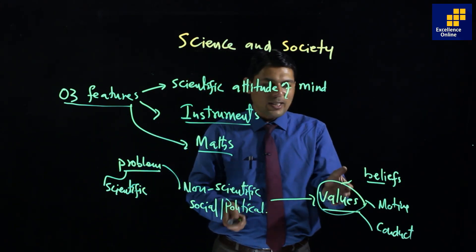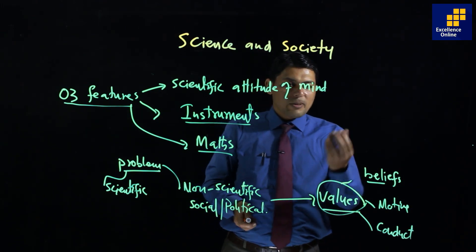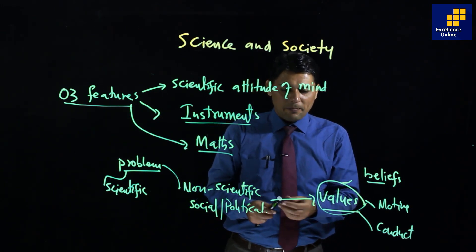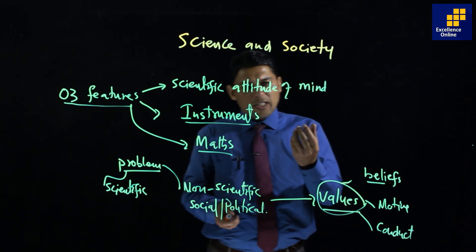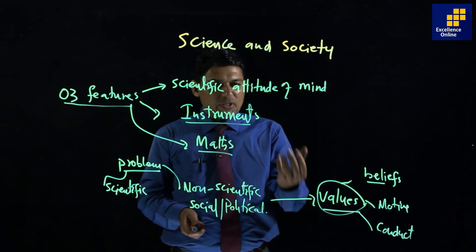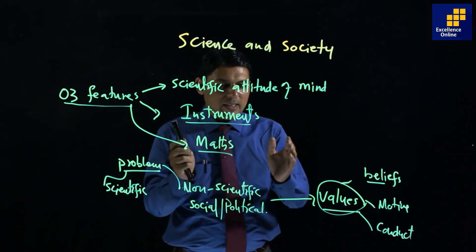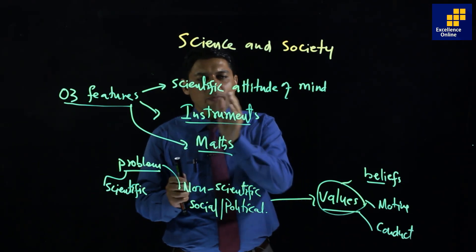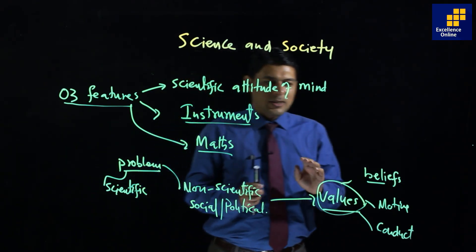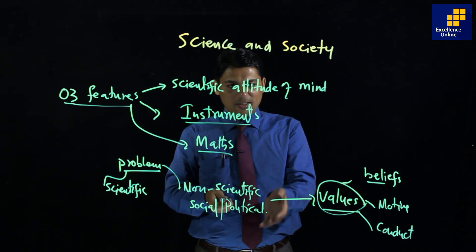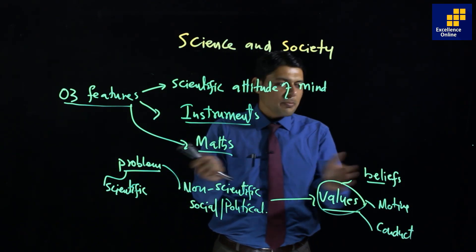We have some universal values — like justice. Justice is commanding. Honesty is commanding. These are universal values that apply across all societies.